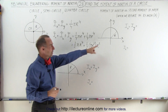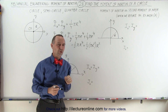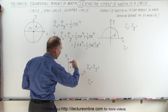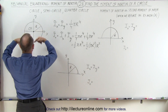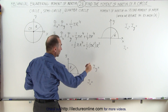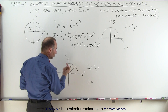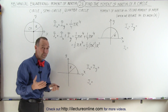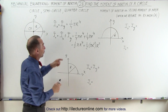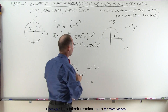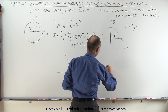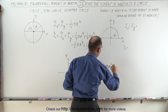Before we go to the semicircle, let's do the quarter circle first. We have a quarter circle rotating about the x-axis instead of a full circle, which means the moment of inertia relative to the x-axis or the y-axis should only be one-quarter the moment of inertia of a full circle. So one-quarter of one-quarter tells us this is equal to one-sixteenth pi r to the fourth power.